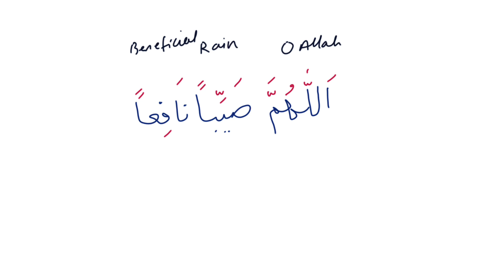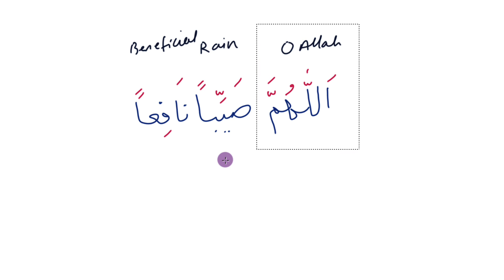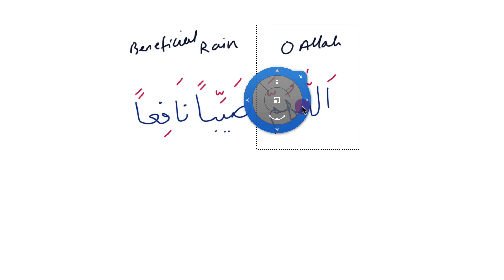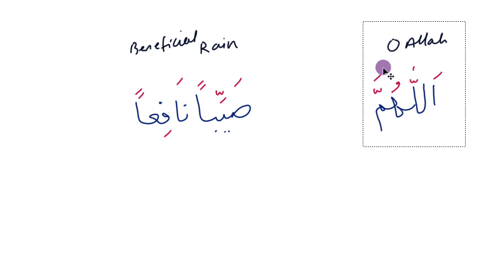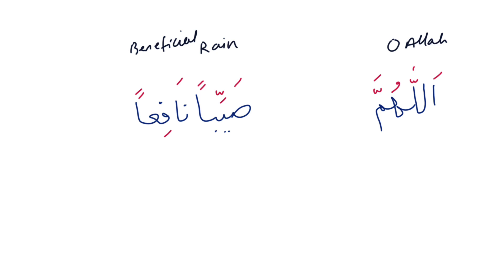What we're going to do is split this dua. Sometimes in the Arabic language, words are missing in a sentence. If you're Arab, you know what those words are; if not, you need to learn them. So let's make a split between اللهم and صيب, and then we're going to insert the missing word.